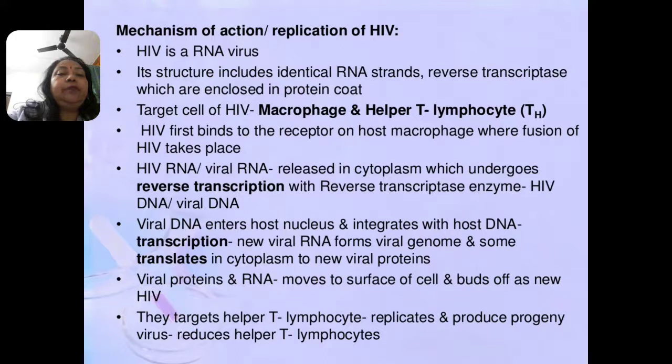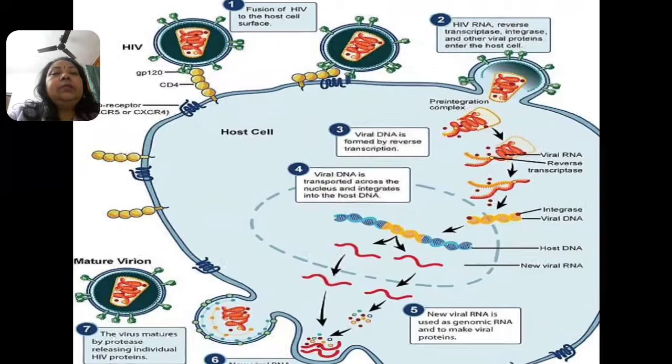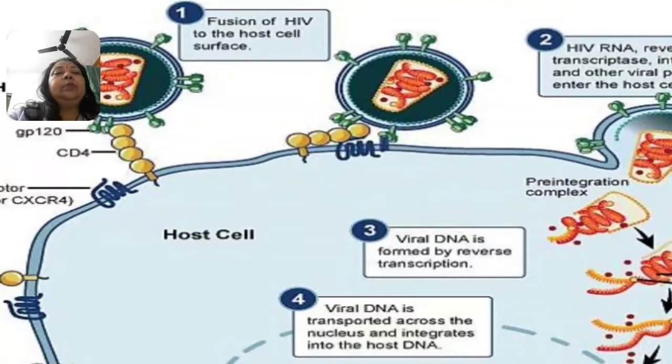With the help of transcription, new viral RNA forms viral genomes, and some are translated in the cytoplasm to new viral proteins. This viral protein and RNA genome move to the surface of the cell and bud off as a new HIV virus. These viruses then target helper T-lymphocytes, replicate, and produce progeny viruses, day by day reducing the number of T-helper lymphocyte cells.